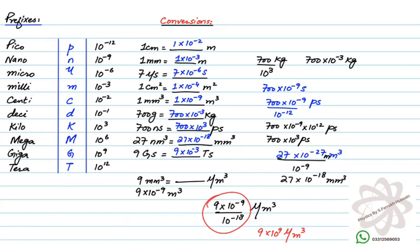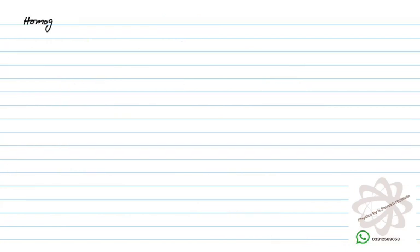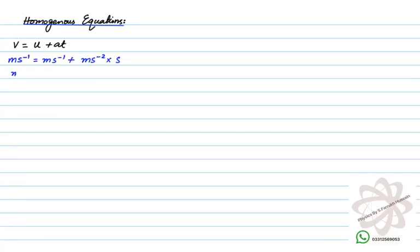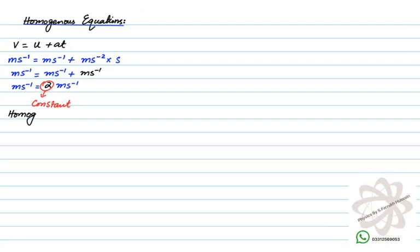Now, what we are going to do today is homogeneous equations. Homogeneous equations are those equations that have the same units on both sides. As you can see in this example, the equation v = u + at is actually derived from a = (v − u)/t; if you make v the subject, it becomes v = u + at.